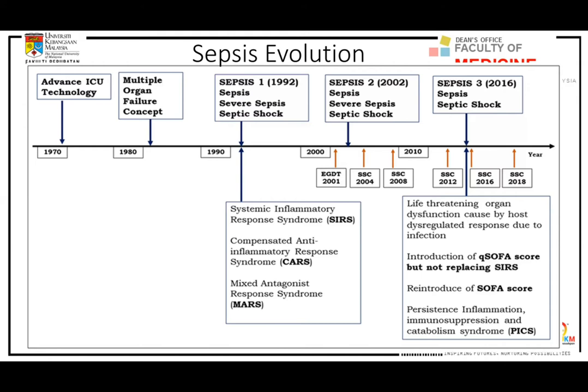However, in 2016, a group of intensive care specialists, emergency physicians, and infectious disease physicians agreed that the Sepsis-1 and Sepsis-2 definitions were too sensitive — they included too many patients in statistics that were not realistic. Patients presenting with sepsis syndrome criteria such as fever might be discharged immediately from the emergency department. Sepsis-1 and Sepsis-2 didn't reflect the true severity of the condition.